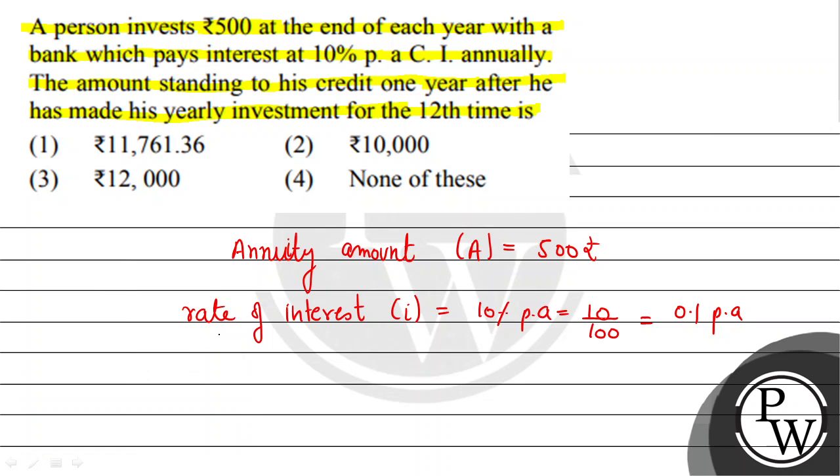Now what is small n? Small n is your time in years. Small n की value कितने given है? Small n is given at the end of 12th time, so the value is 12 years.